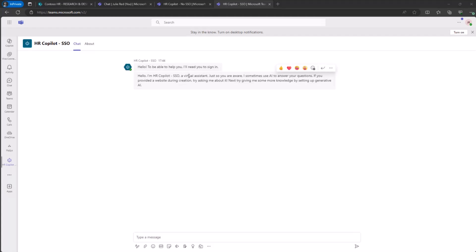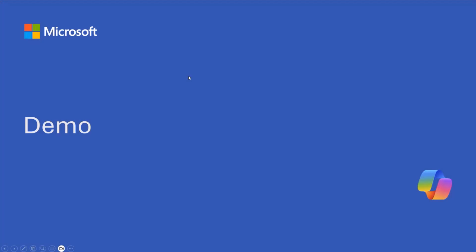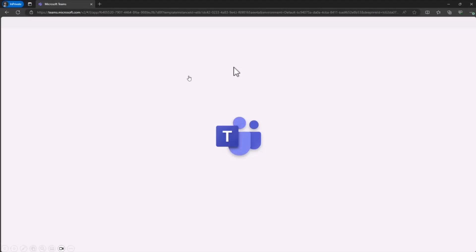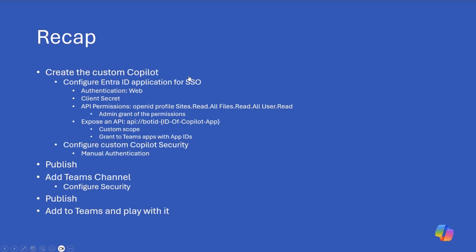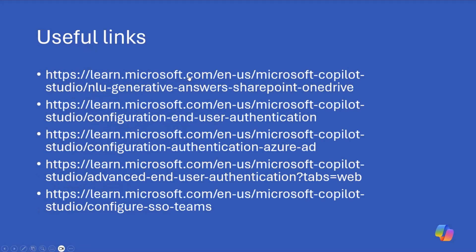So let me briefly switch back to the slides. This was a backup plan in case of any need — I pre-recorded the running solution. This is a recap for your reference: all the steps you need to go through to register and publish a custom Copilot in Teams with single sign-on, plus a set of useful links if you want to dig more into this topic.